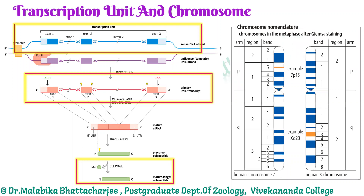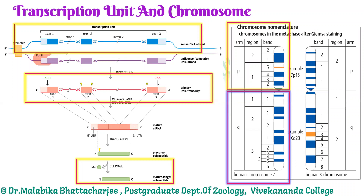Moving on to chromosomal nomenclature — based on the centromere, taking it as the pivotal point, we have two arms. One arm is known as the P arm, which is the short arm. The word P comes from the word 'petite.' The long arm is the Q arm. Each arm can be divided further into regions. For example, the P arm has been divided into region 1 and region 2, and each region can be further divided into bands. Region 1 of the P arm has five bands, and region 2 has two bands.